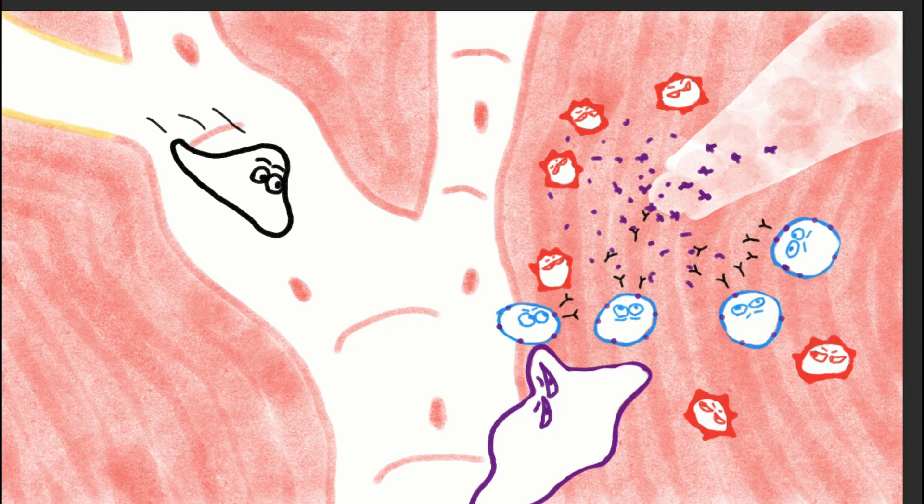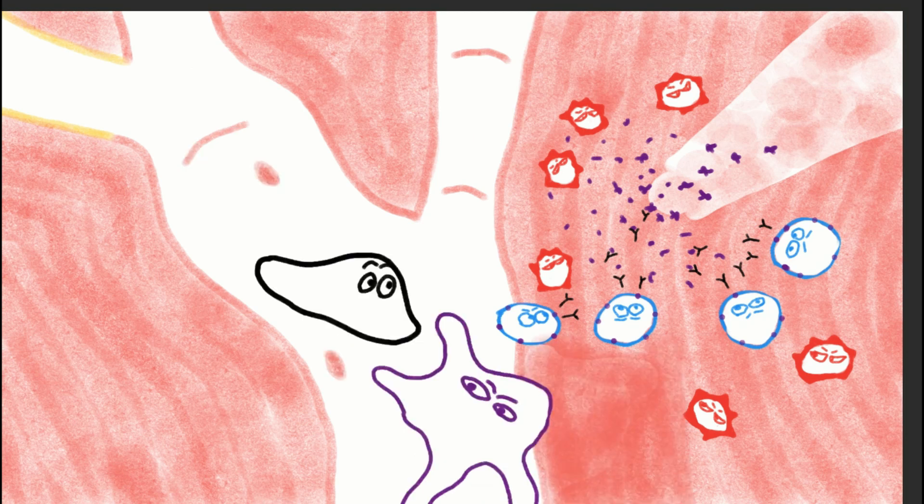There he could see the B cells already at work alongside the macrophages and NK cells, all gobbling up the invaders. We can see the B cells, the blue cells, releasing Y-shaped black antibodies. And these antibodies will stick to the invaders, making it easier for the macrophages to eat them.